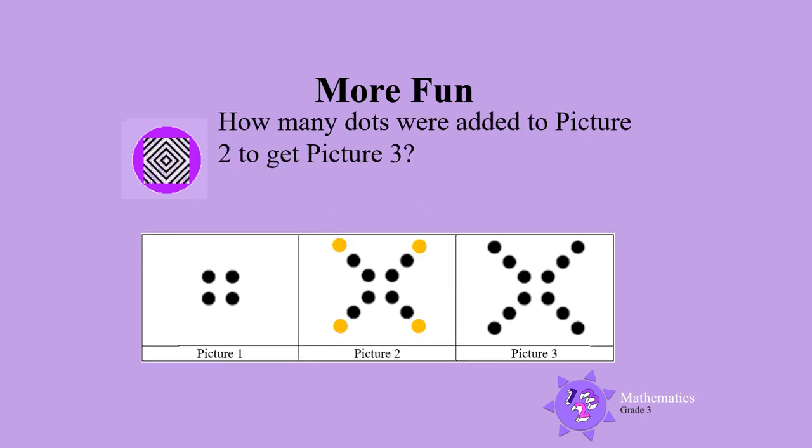Now, how many dots were added to picture two to get picture three? Can you see that if we add four dots to picture two, we get picture three? So, we need to add four dots to picture two.